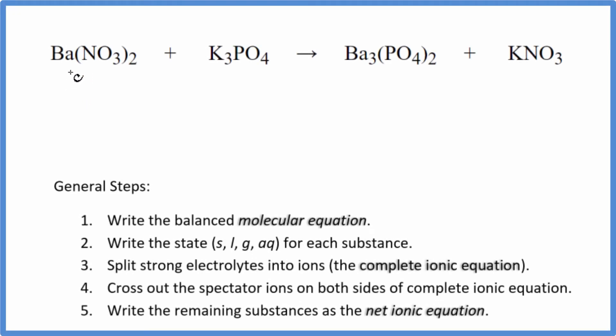In this video, we'll write the balanced net ionic equation for Ba(NO3)2 plus K3PO4. This is barium nitrate and potassium phosphate. The first thing we do with net ionic equations is we balance the molecular equation. This is our molecular equation up here.